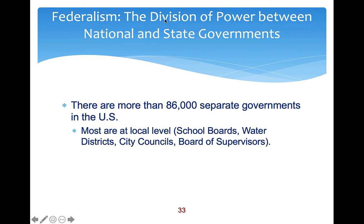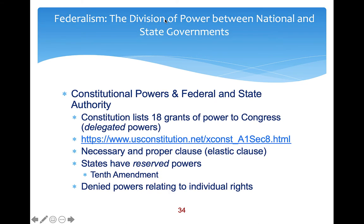There are more than 86,000 types of government here in the US, and most of them are on the local level — school boards, water districts, city councils, board of supervisors. When we talk about federal power and constitutional authority, the Constitution lists 18 specific powers delegated to Congress. States and local governments can't engage in those powers. You can click the link to see all the delegated powers — I won't go over every single one.